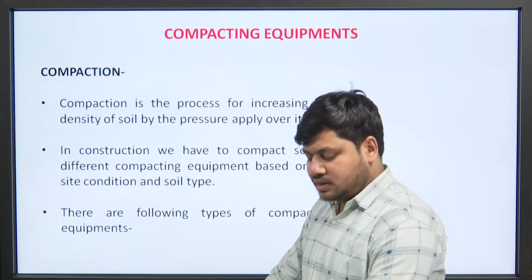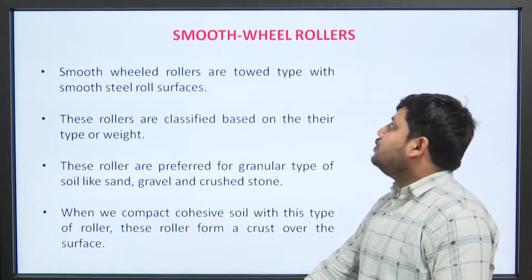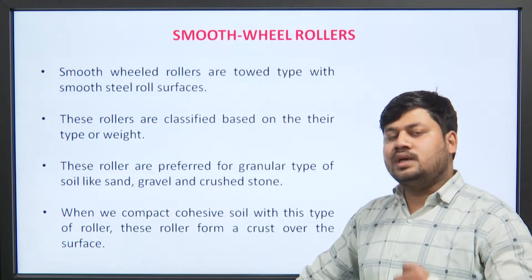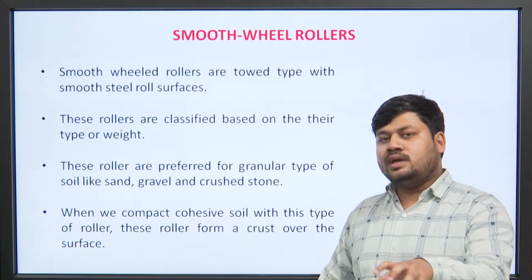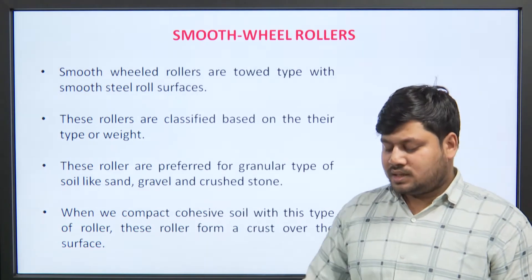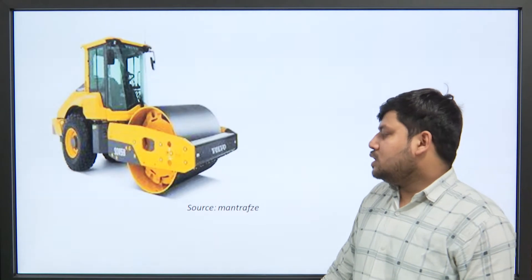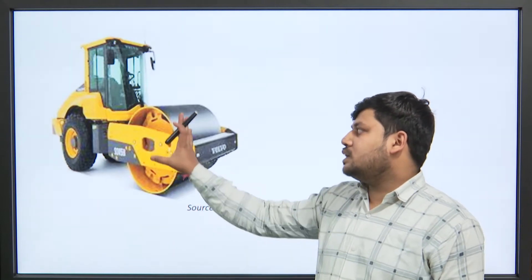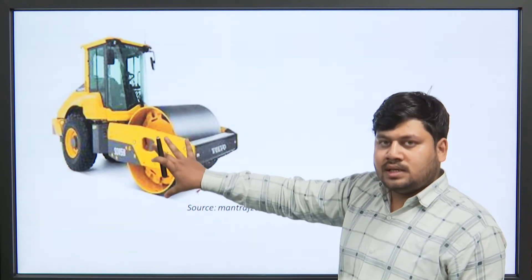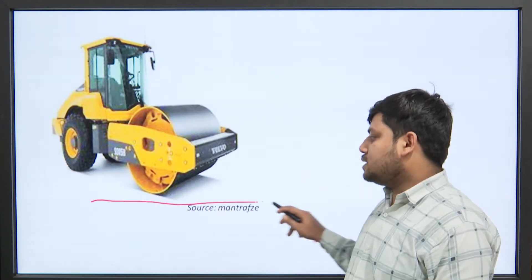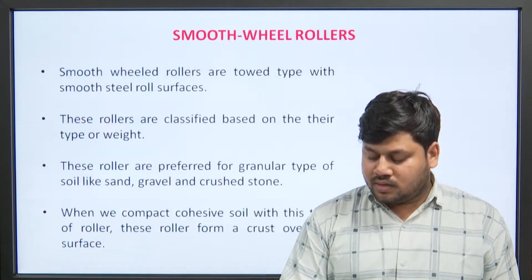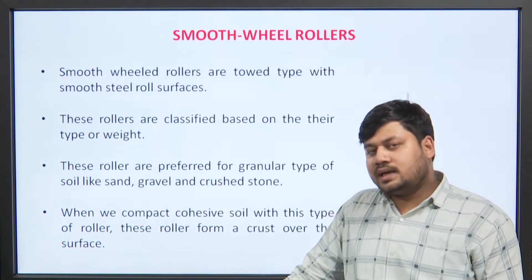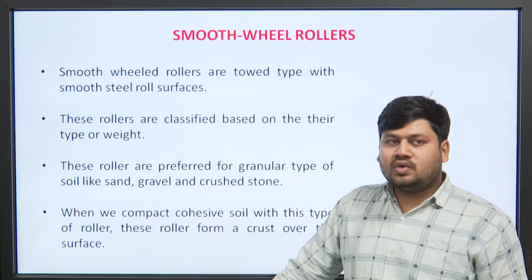The first compaction equipment is the smooth wheeled roller. What is a smooth wheeled roller? It is a simple roller which has a smooth wheel. On the basis of the weight of the smooth wheel, the compaction will occur. This is a simple picture of a smooth wheeled roller — this is a drum which is used for the compaction of soil.